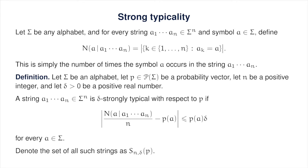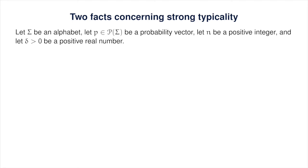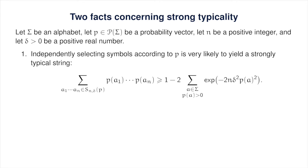One more bit of notation: the set of all delta strongly typical strings of length n with respect to a given probability vector p is denoted S sub n delta of p. We're going to make use of two facts concerning strong typicality. The first is that if you randomly choose the symbols of a string of length n independently according to a given probability vector p, then it is very likely that you'll obtain a strongly typical string, at least when n is large. The left-hand side expresses the probability that a randomly chosen string is delta strongly typical, and the right-hand side is an expression that approaches one exponentially fast as n goes to infinity.